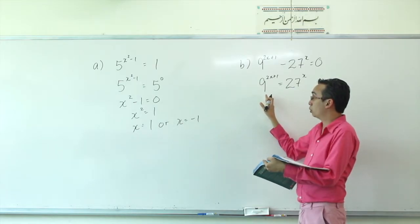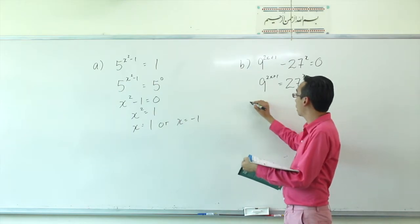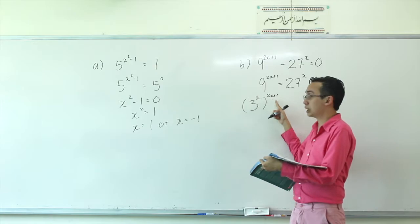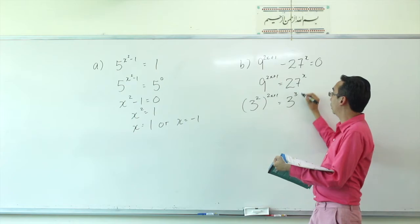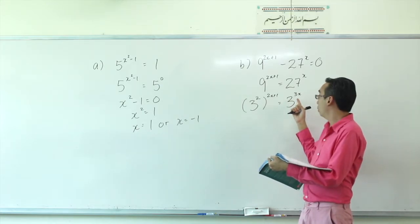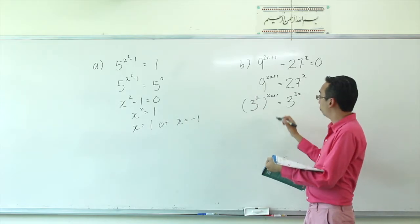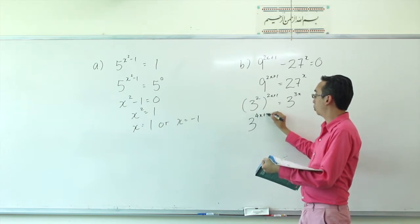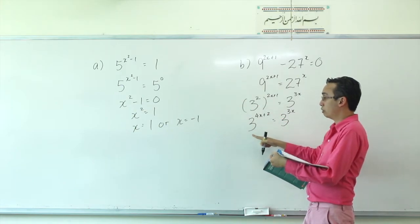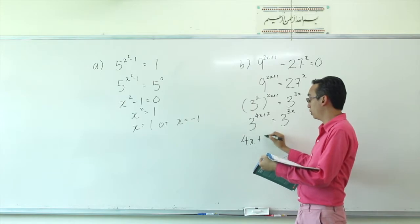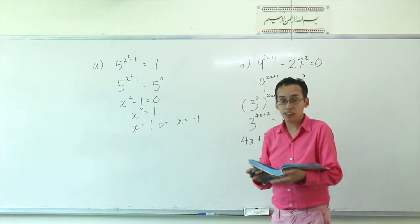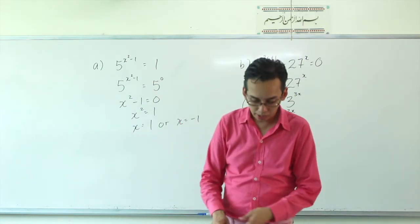We can change both into base 3. So 9 becomes 3 squared, giving us 3 to the power of 2 times the original power of 2X plus 1. And 27 becomes 3 cubed, giving 3 to the power of 3X. Multiplying the powers, we get 3 to the power of 4X plus 2 on the left, and 3 to the power of 3X on the right. Since both are base 3 and nothing else, the indices must be equal, giving us X equals negative 2.